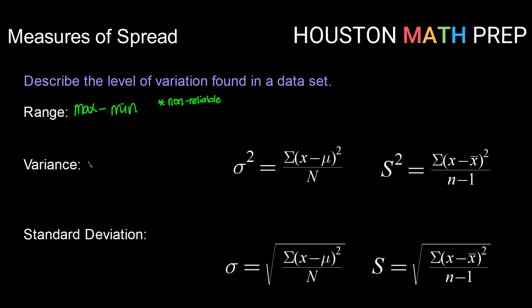The variance measures average deviation — deviation just meaning change — around the mean. It's calculated differently based on whether you're working with a population data set or a sample data set. I've got both formulas listed up there for you. Don't worry about them looking a little bit complex — they're really not too bad. A lot of times we're going to use technology to help us calculate these, and calculators handle these things super simply.